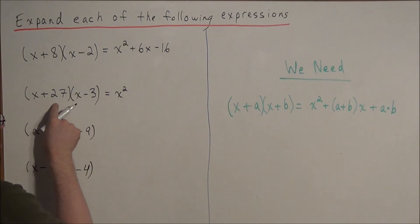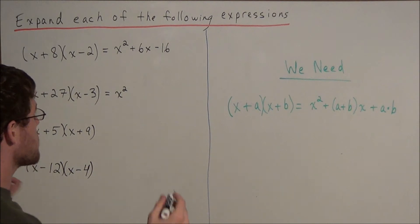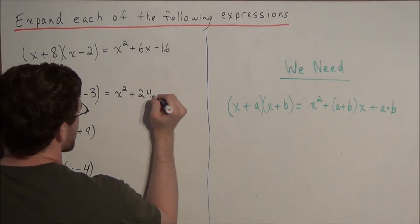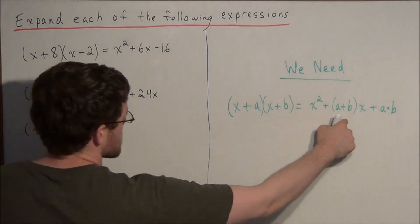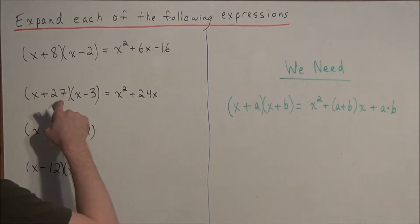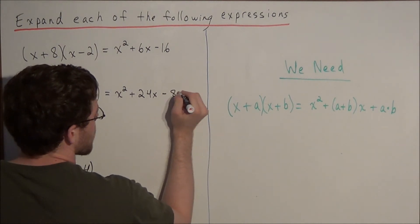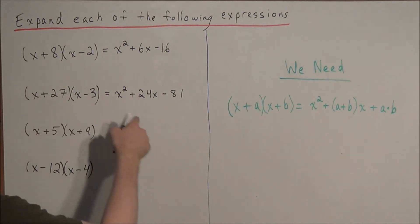Well we would have an a value of 27 and a b value of negative 3, so 27 plus negative 3 would be a positive 24, so we have positive 24x, because remember a plus b is the term before x. And now we have 27 times negative 3 is a negative 81. So that takes care of this example.